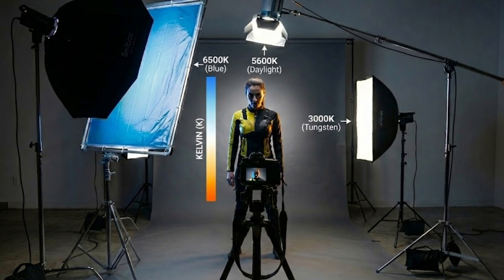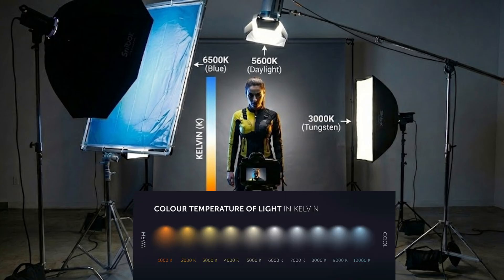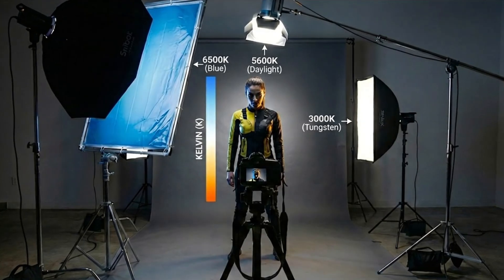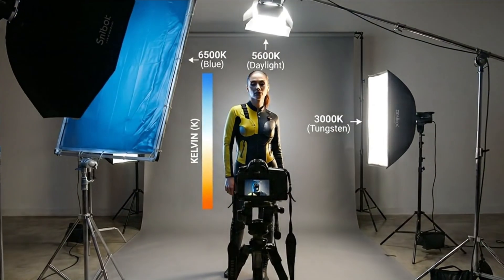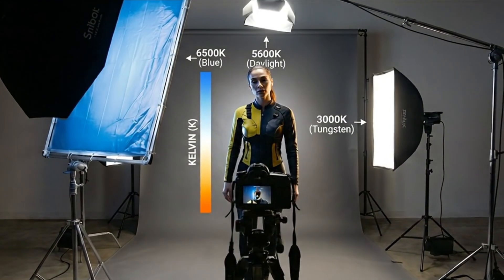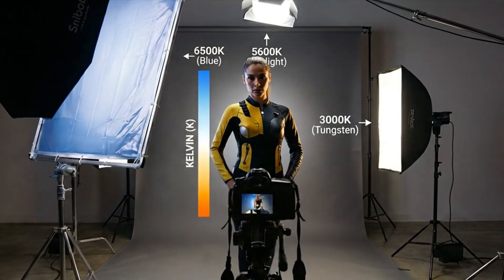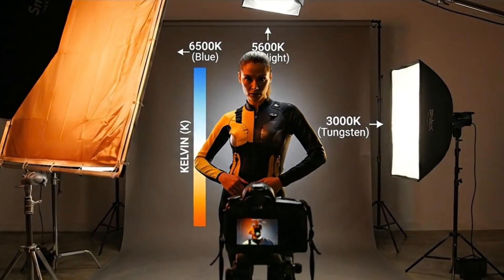Now comes the mood or Kelvin color temperature. Kelvin defines how light feels: lower values around 3K are warm and cinematic like tungsten, and higher values like 5K are cool and clean like daylight or blue. When you prompt an AI video model, you're not just placing the lights — you're telling it how the scene should feel.